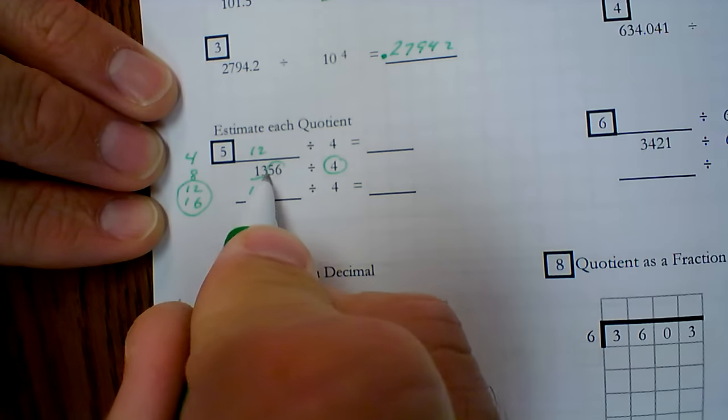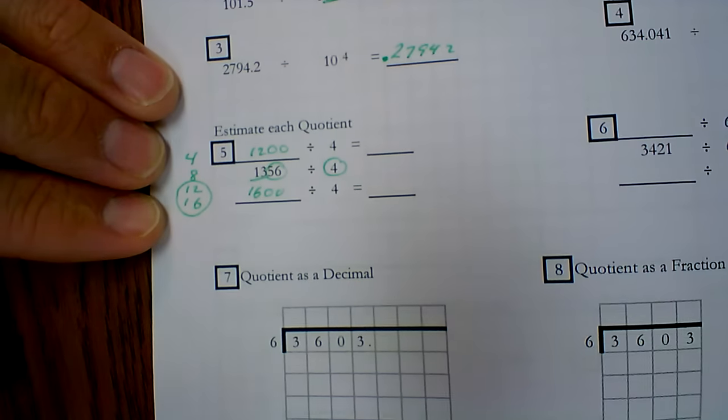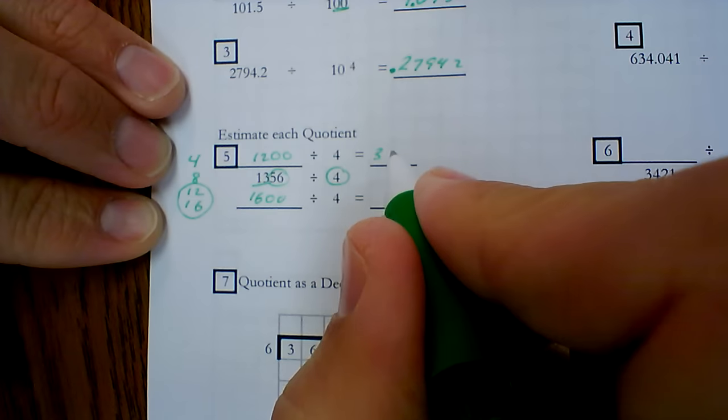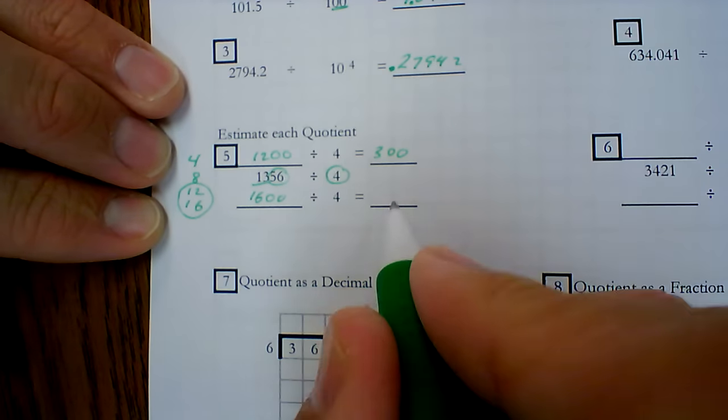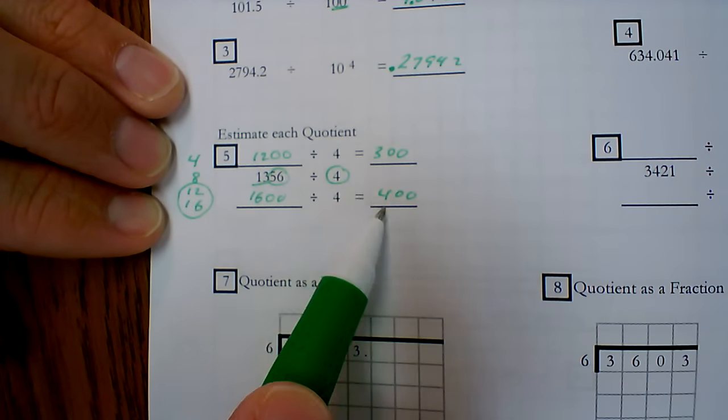So when I count by fours, the two closest multiples of 4 to 13 are 12 and 16. Now, I've got two digits here. So that means I'm going to add two zeros. I'm going to add two zeros. And then I divide. 12 divided by 4 is 3. I add my two zeros. 16 divided by 4 is 4. I add my two zeros. These numbers should be consecutive.